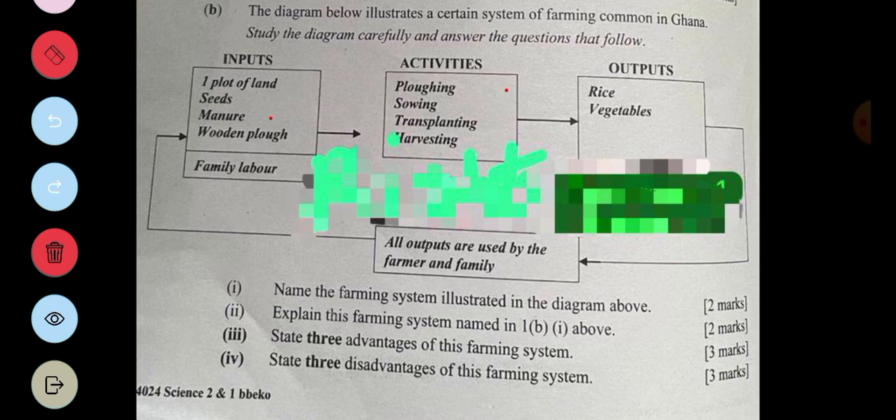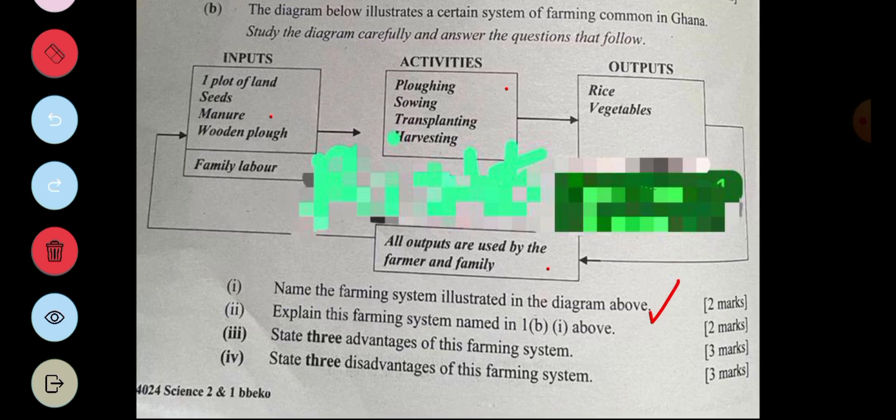Then the first one is asking us, name the farming system illustrated in the diagram above. It's subsistence farming. As I explained, the farming system subsistence farm is a type of farming practice where farmers grow crops and raise animals to meet family needs with no surplus, with no mindset of selling or trading to make money.